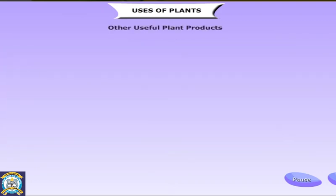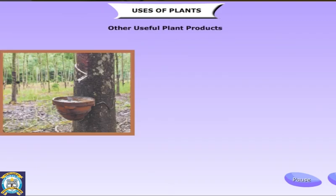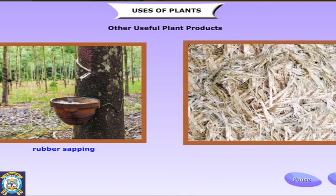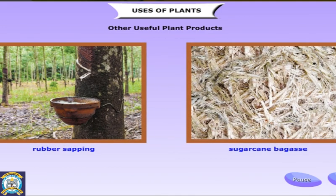Rubber is made from the sap or juice of a tree. The gum you use to paste pictures is a resin from a tree. Even chewing gum is obtained from the juice of the sapodilla tree.